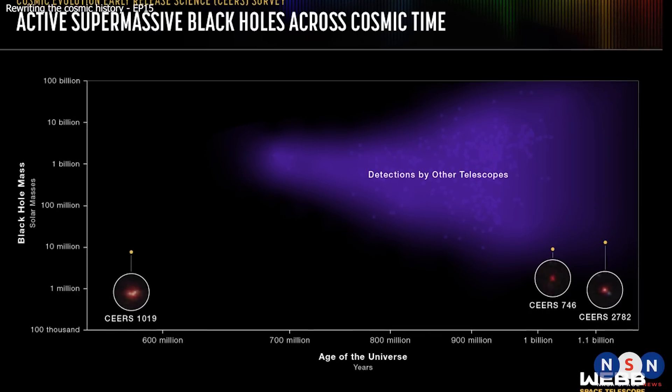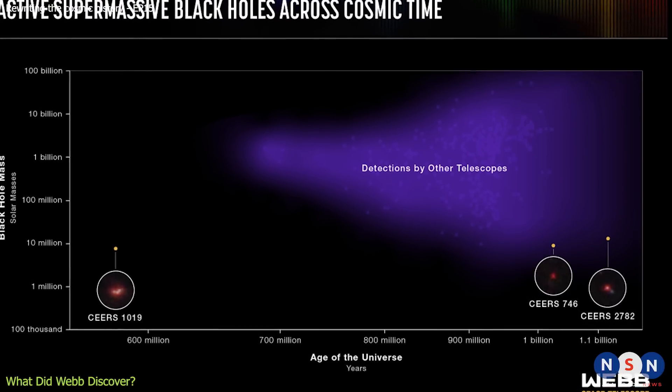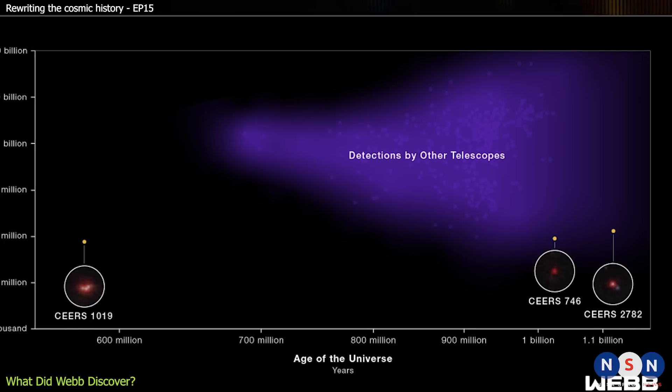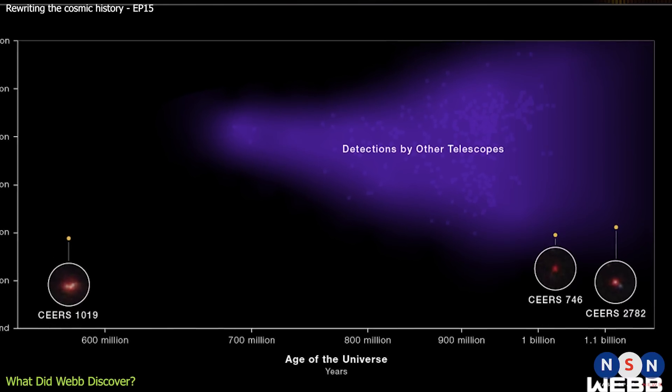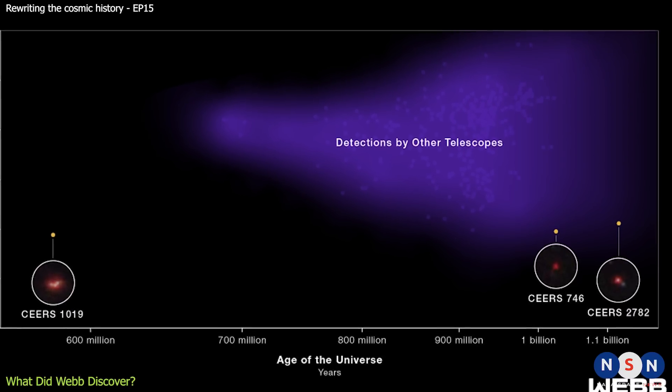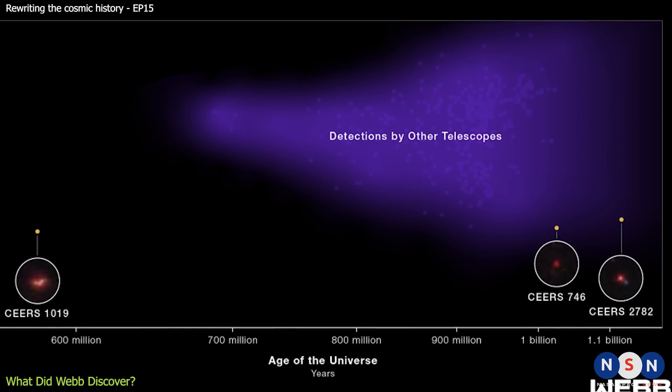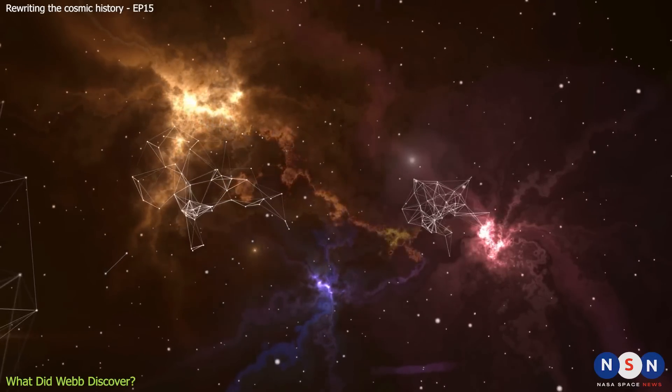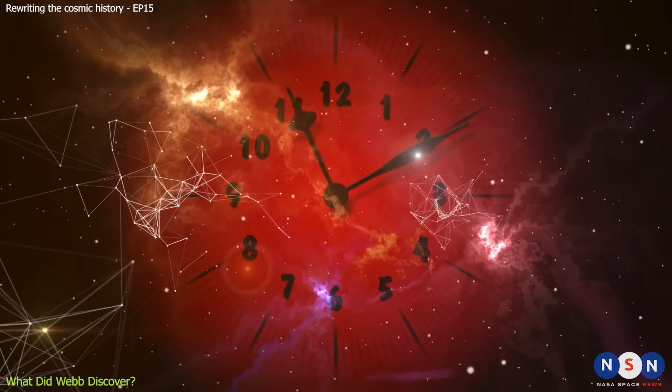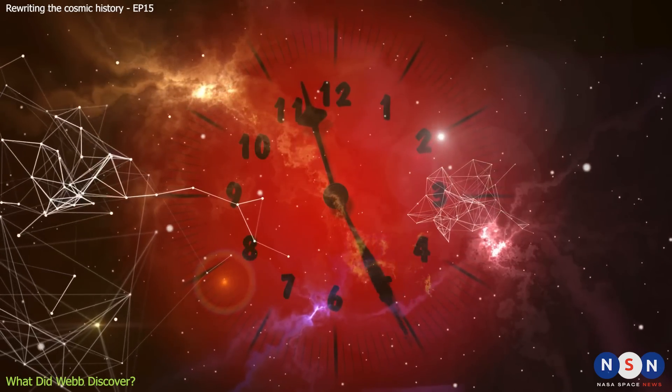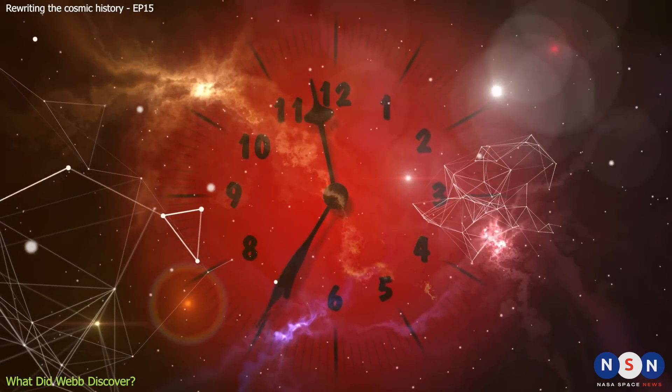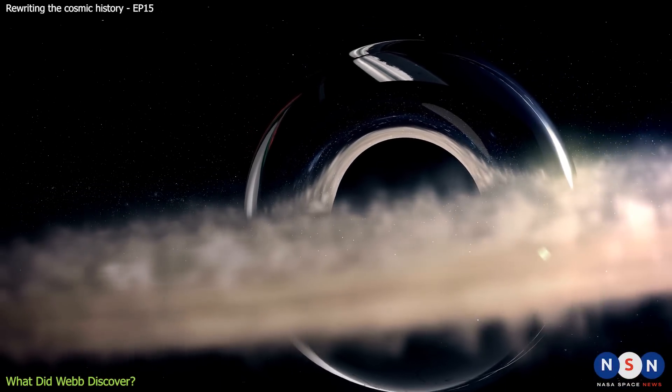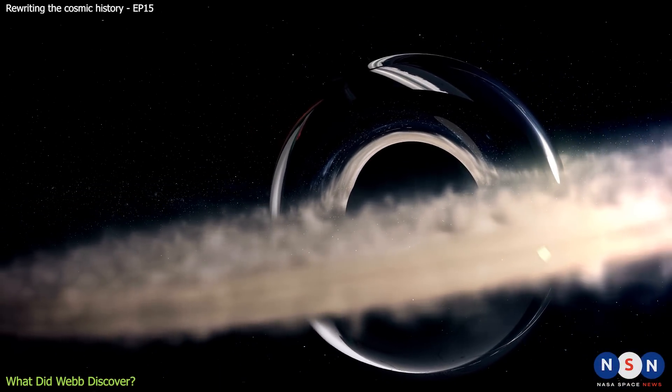One of these results is the discovery of the most distant active supermassive black hole ever seen. The black hole is located in a galaxy called SEERS 1019, which formed just over 570 million years after the Big Bang. That's only about 4% of the current age of the universe. To put that into perspective, if you imagine that the history of the universe is a 24-hour clock, this black hole existed at 12:57 a.m.